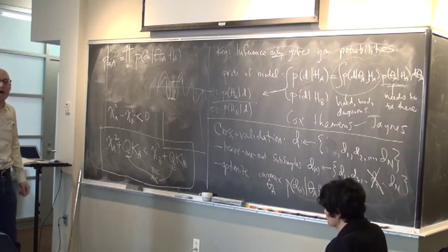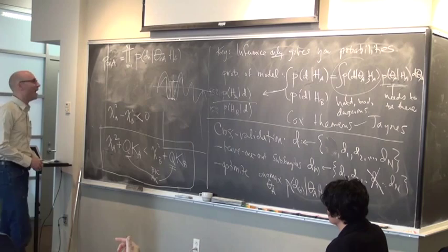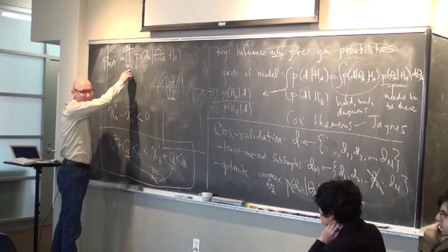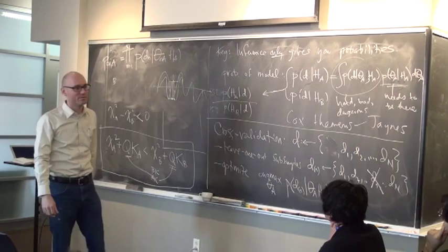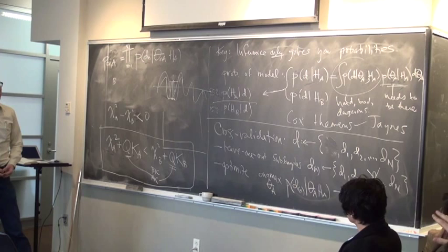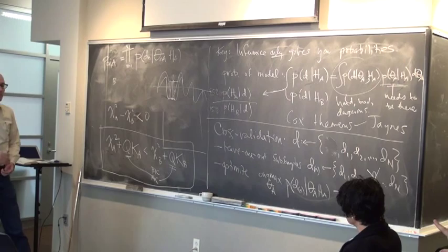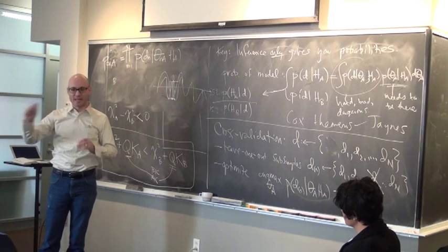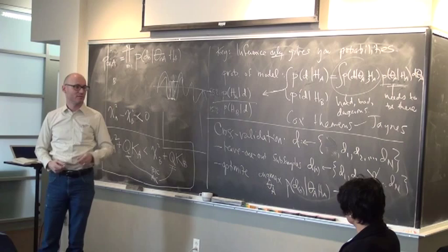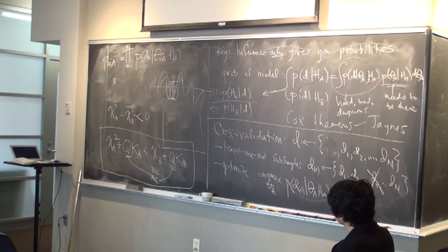Cross-validation loops over every left-out data point, computes the prediction, and puts it together as a product — one cross-validation likelihood per model. Then you do the same thing for model B. The ratio of those probabilities is very related to the ratio of the marginalized likelihoods, but the parameters are different in every case. This is more expensive because you have to do this optimization every time, but it is much less assumption-heavy than AIC or BIC. Cross-validation automatically penalizes more flexible models without needing to specify a penalty constant.